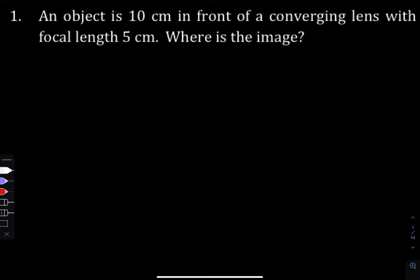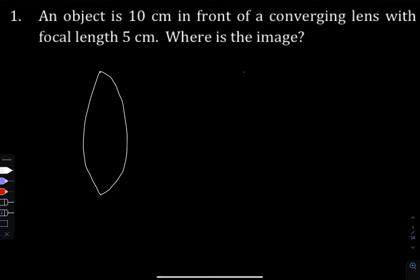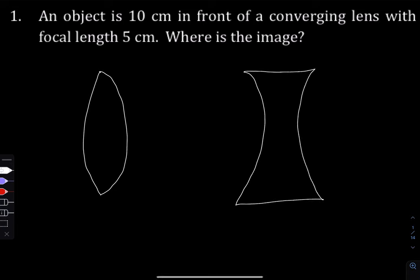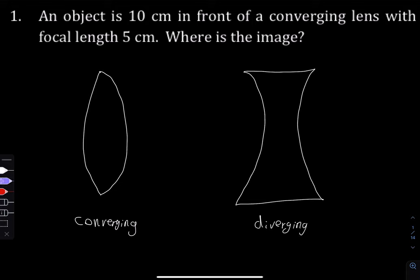They're asking us about a converging lens, so we need to talk about types of lenses. In general we're going to have two types of lenses: converging, which you see on the left side, and diverging, which you see on the right side. With converging lenses the light is going to enter the lens and it's going to be deflected toward the center of it.